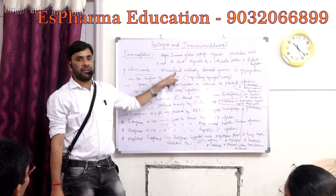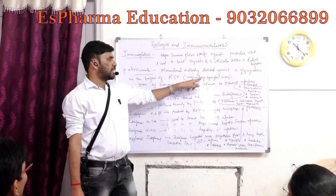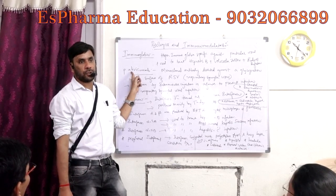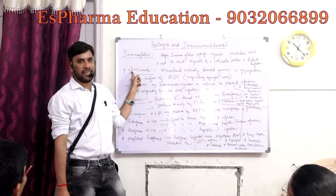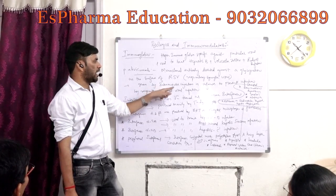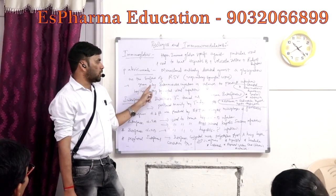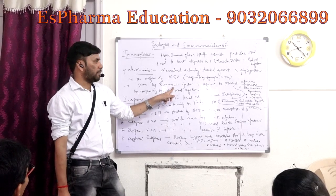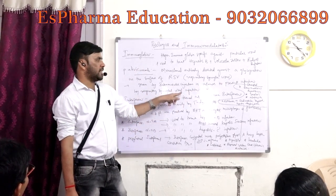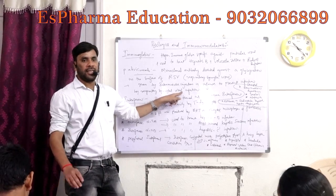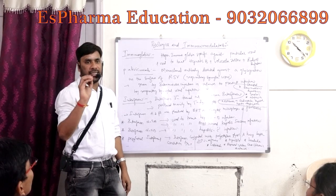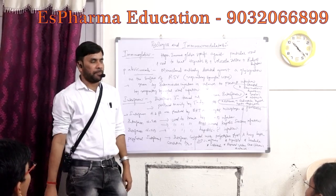Name the monoclonal antibody which is used to treat respiratory syncytial virus infection. The answer is Palivizumab, used to treat respiratory syncytial virus infection. It is given in the form of intramuscular injection to prevent infection by respiratory syncytial virus.